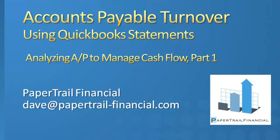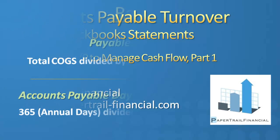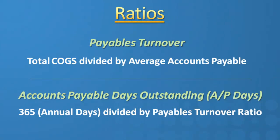In this first video, I'll go over how to use your QuickBooks statements to calculate your average payables conversion time. There are two simple ratios that we need to calculate. First is the AP turnover ratio, which is total cost of goods sold divided by the average balance in the accounts payable account. This tells us how many times on average payables turnover during the year.